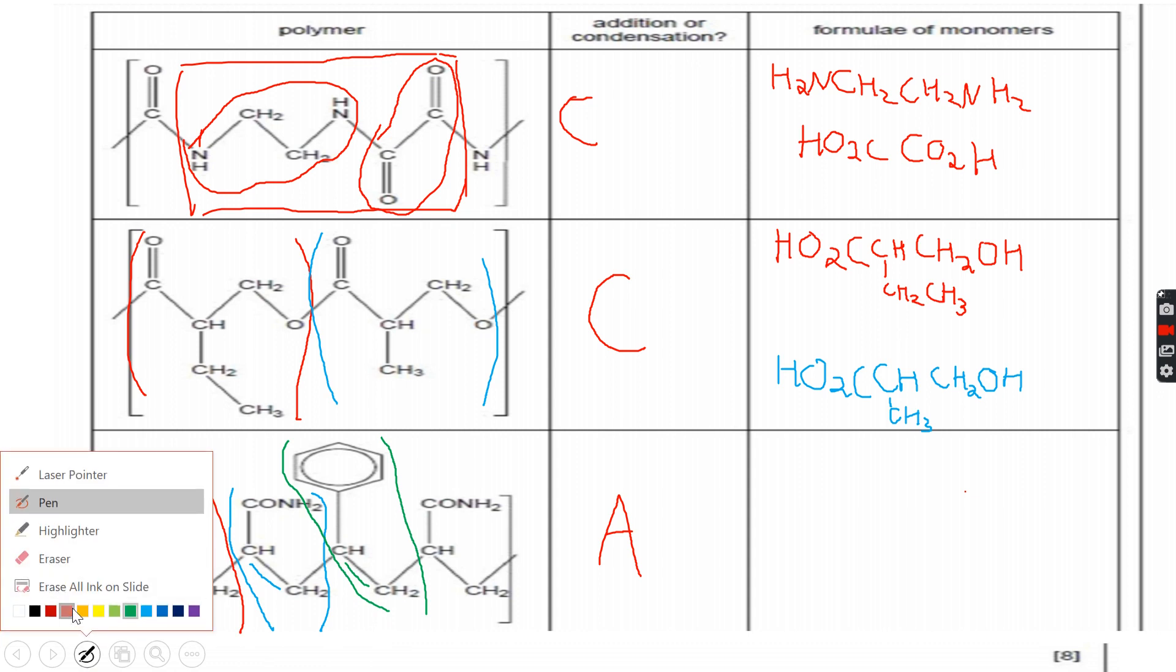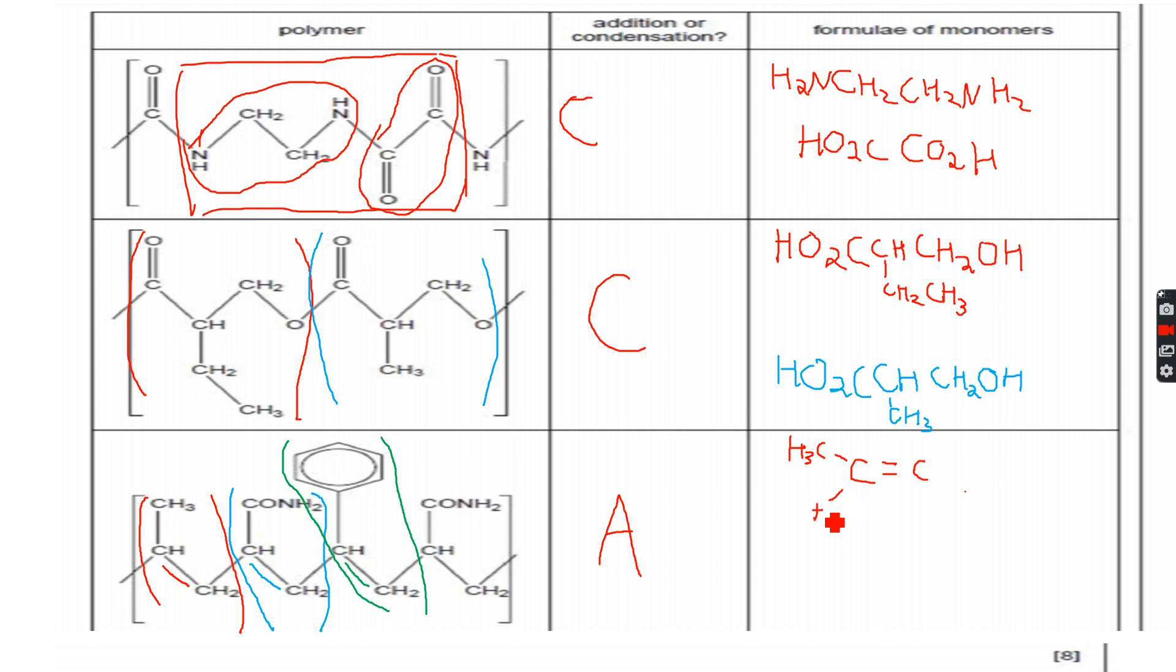So let's write our three monomers over here. The first one is C=C. It is attached to a CH3 and H. The other carbon is attached to two hydrogen atoms.